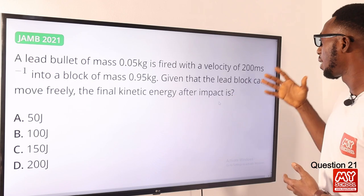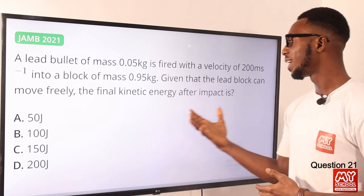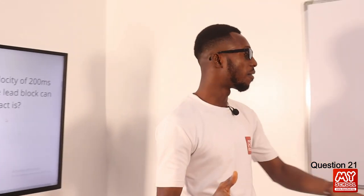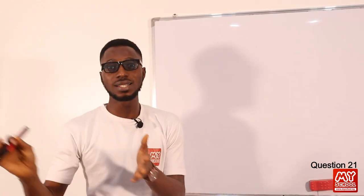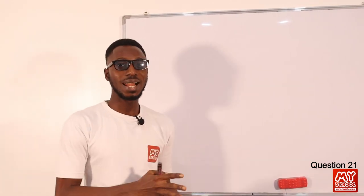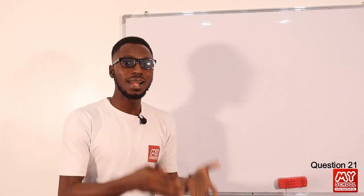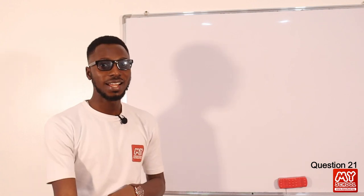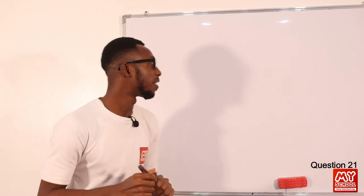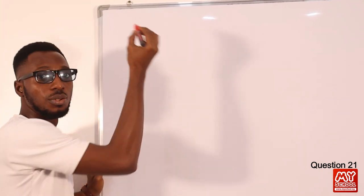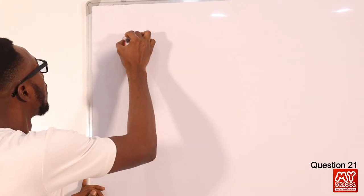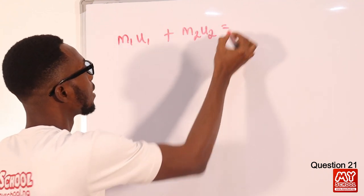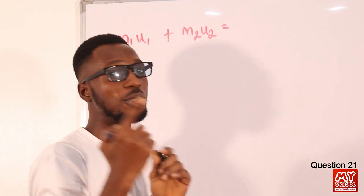Given that the lead block can move freely, the final kinetic energy after impact is what? When we apply the law of conservation of linear momentum, we should know that this kind of collision is inelastic. Under such conditions, the kinetic energy before impact is greater than the kinetic energy after impact. The momentum is conserved, so using the law of conservation of linear momentum, we have m1u1 plus m2u2.